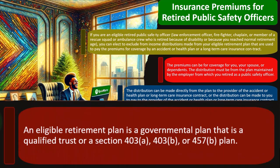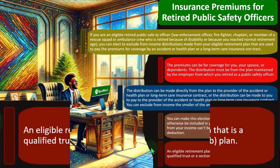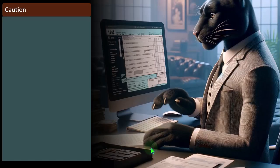An eligible retirement plan is a government plan that is a qualified trust, or a Section 403A, 403B, or 457A plan.